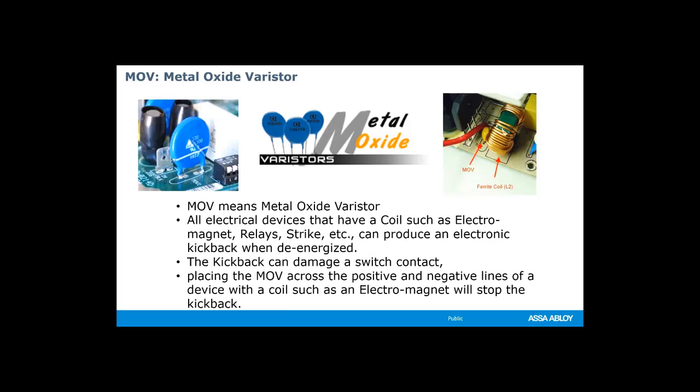We're going to go over some different types of items used in electronics. The next one is an MOV — a metal oxide varistor. All electronic devices having a coil, such as electromagnets, relays, and strikes, can produce electronic kickback when de-energized. The kickback can cause damage to the switch. By attaching an MOV across the power lines between the negative and positive lines of the device — such as an electromagnet — this will prevent the kickback.